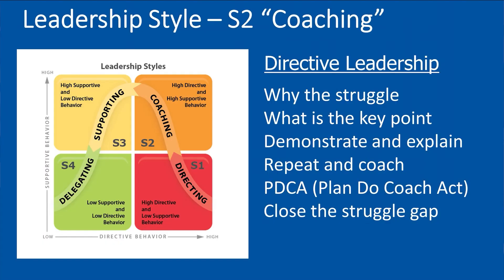To do that, you first have to comfort them on the support side, then go back to the details of directive leadership but more specifically. As a coach it's your responsibility to help them identify why they're struggling — what is the exact key point they're not grasping or executing correctly. You need to demonstrate and explain it, or arrange for somebody who can do so properly. Repeat and coach, repeat and coach. I joke it's PDCA except now it's plan, do, coach, and act — repeat the cycle again and again. It's your job to help them close that struggle gap.